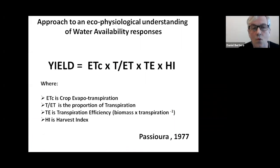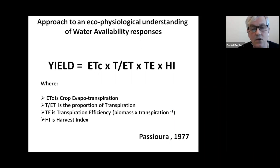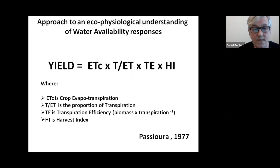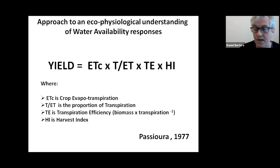How do we approach water from an eco-physiological perspective? This equation was posed by a scientist from Australia almost 40 years ago, John Passioura. He divides the different components related to water and affecting yield in terms of: first, the amount of water used by the crop — crop demand for transpiration; second, the proportion of that water used as transpiration; then transpiration efficiency, which is the ratio between biomass accumulation and water transpiration; and finally, harvest index. This is the approach I will use for this presentation on water.